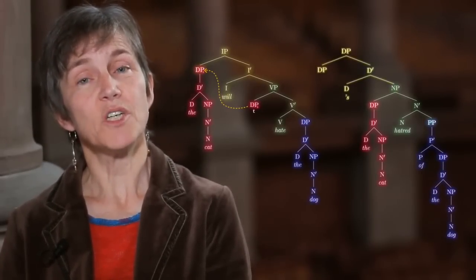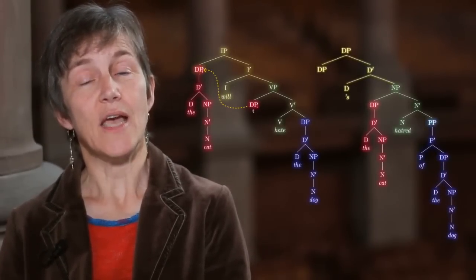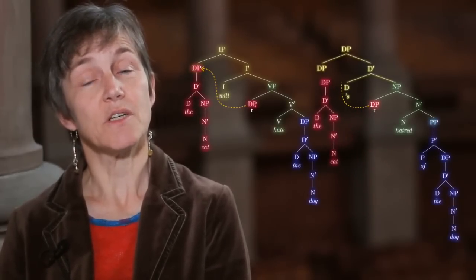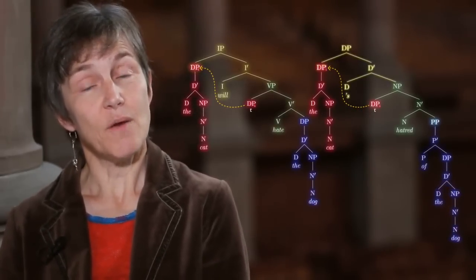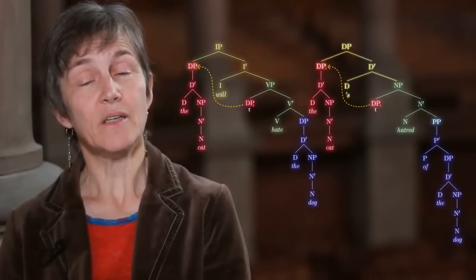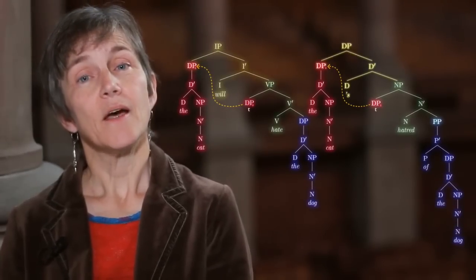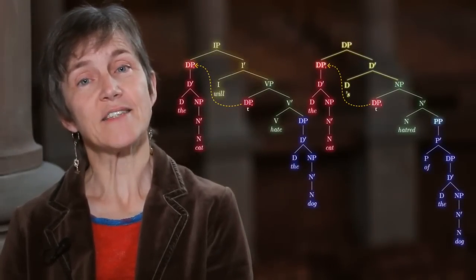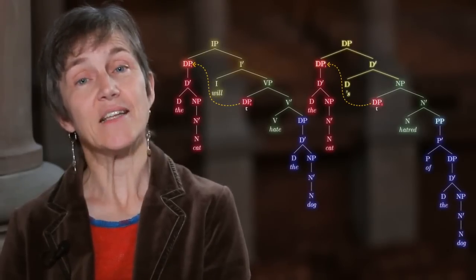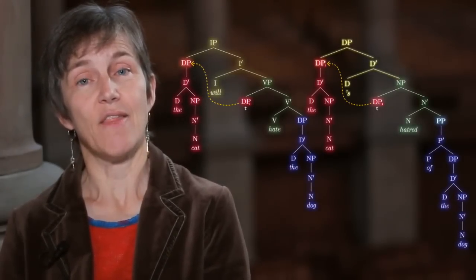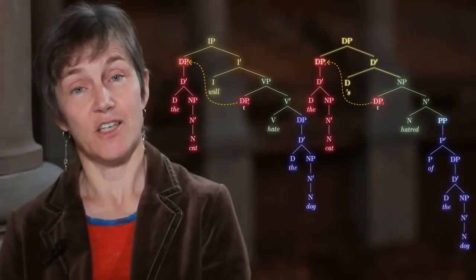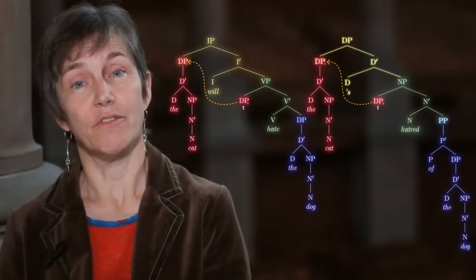The way we solved that in sentences was to hypothesize that the subject of the VP moves to become the subject of the IP. We can use exactly the same solution for the nominal: the subject of the NP moves to become the subject of the DP. That gives us the right order for the DP, and a tree which reflects the selectional properties of the heads and the fact that the possessor noun phrase is actually an argument of the noun.